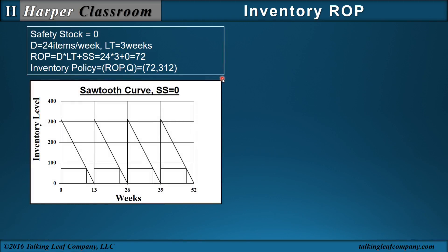Let's see how this is represented conceptually in the sawtooth curve. For a safety stock of 0, at time 0 we receive an order for 312, which is our lot size. As time goes by, our inventory decreases and we want to receive another order in week 13 of 312. Since our lead time is 3 weeks, we place that order 3 weeks before week 13, which is week 10. Since our demand rate is 24 items a week, going back 3 weeks increases our inventory by 72, so our reorder point is 72.